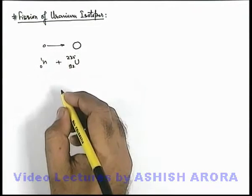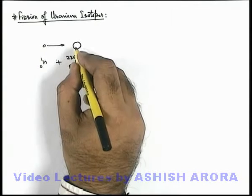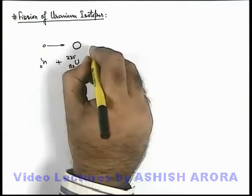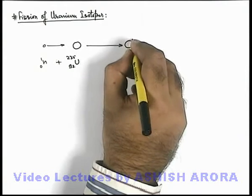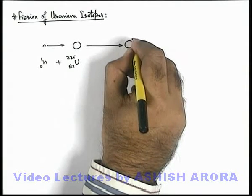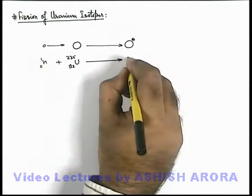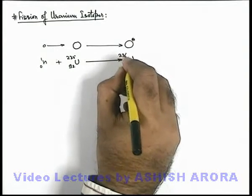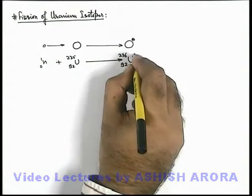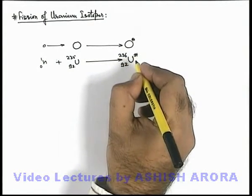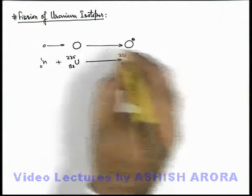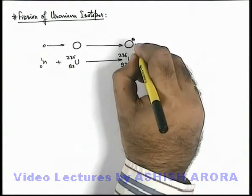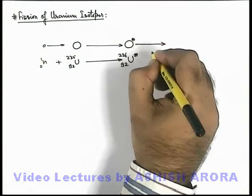When a neutron with some kinetic energy is injected into a uranium-235 isotope, it transforms into an excited nucleus, which is uranium-236 with the same charge number. We write it as an intermediate nuclei, 92 uranium 236, which in a fraction of a second splits into.